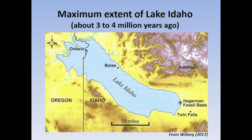Let's take a look at the extent of Lake Idaho in more detail. There's evidence of it as far east as about Twin Falls, Idaho, and it extended in a northwest direction into Oregon beyond the location of present-day Ontario — a distance on the order of 150 miles. The width of the lake could be up to 50 miles. This map is one of several different interpretations found in the literature for the extent and shape of Lake Idaho, and we'll use it as a base map for our virtual field visits.